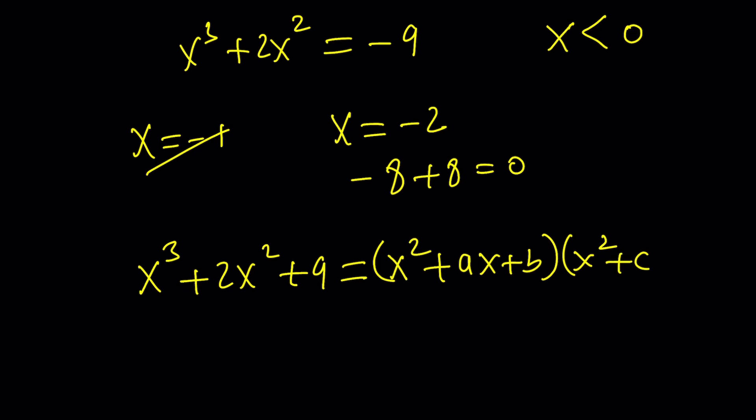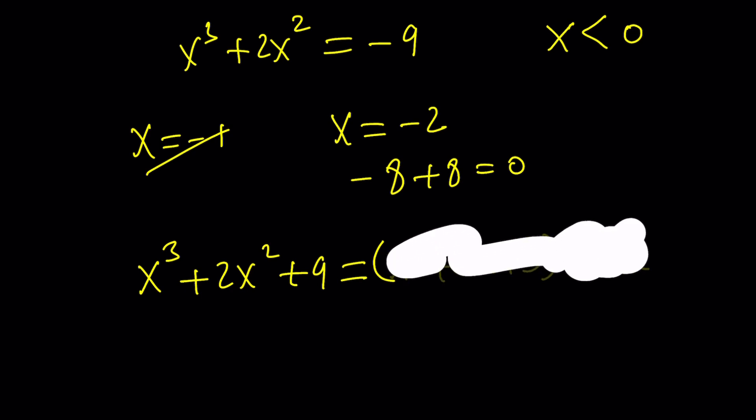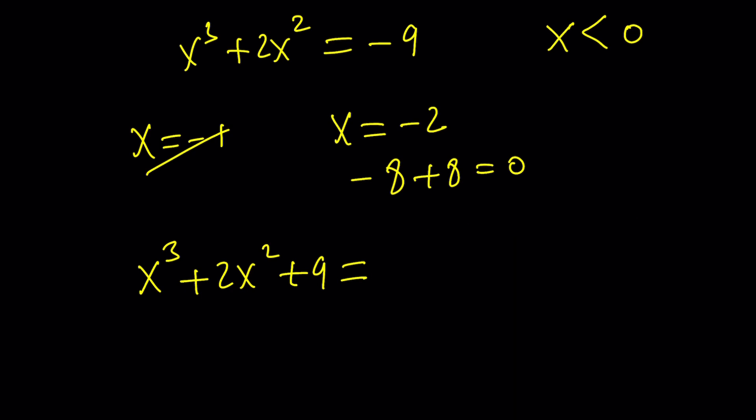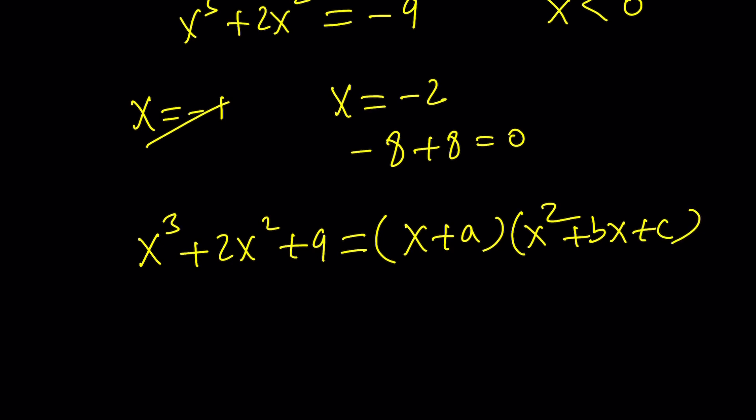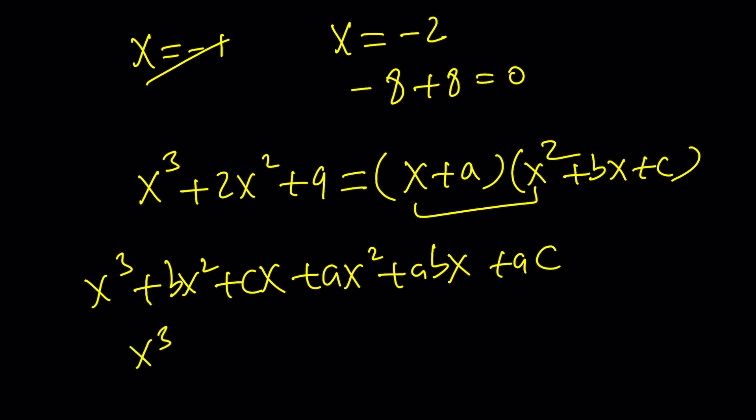So, maybe we can kind of write it like ax plus b and cx plus d. Okay. Oops. No, not really. One of them needs to be linear. Sorry about that. So, maybe x plus a and then x squared plus bx plus c. There you go. And then, if you distribute the right-hand side, you're going to get x cubed plus bx squared plus cx plus ax squared plus abx plus ac.